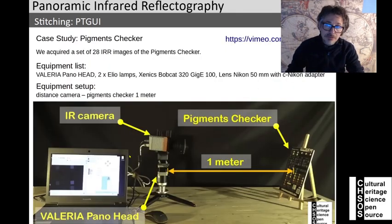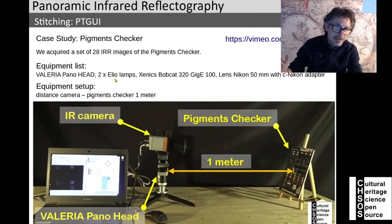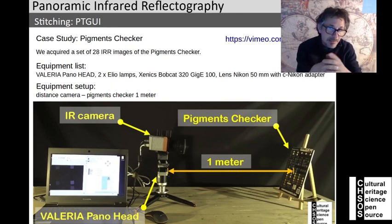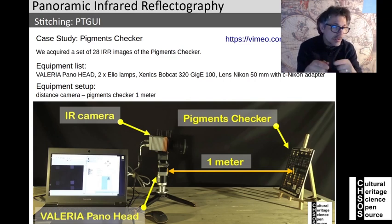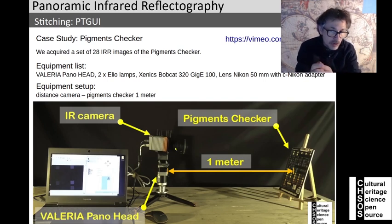For this experiment we used Helio Anogen lamps in a normal setup on the left and right sides. The camera was a Xenix Bobcat 320 pixels — the smaller, more affordable model. The lens mounted on this camera was a Nikon 50 millimeter lens, basically a standard affordable lens. To mount this lens you need a C-to-Nikon adapter.